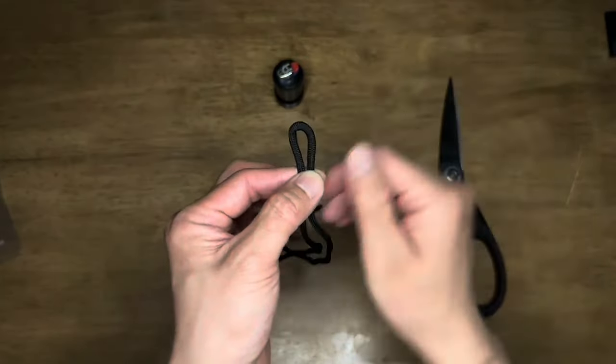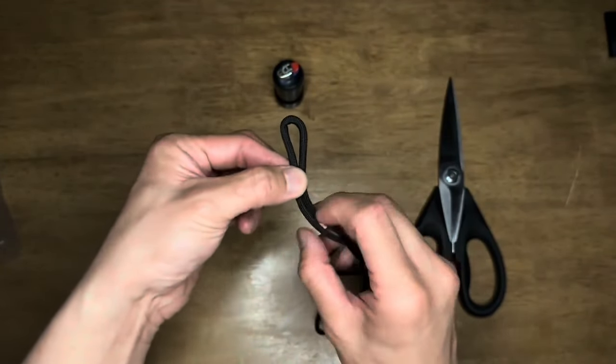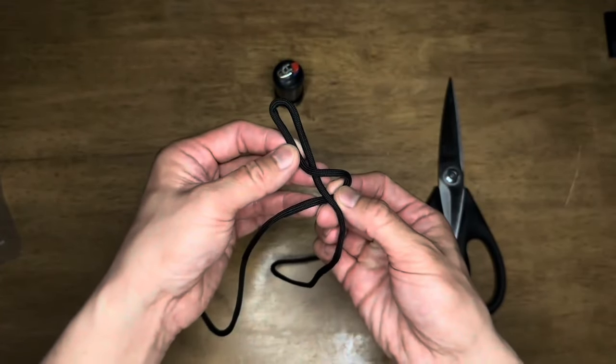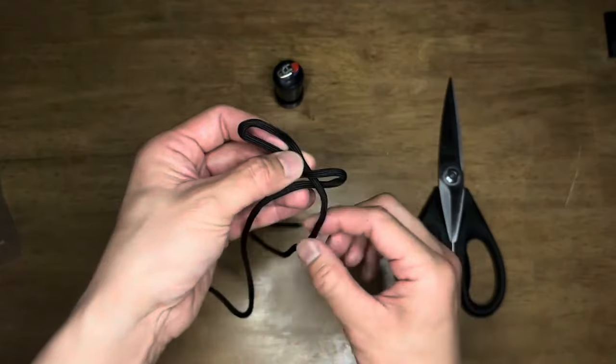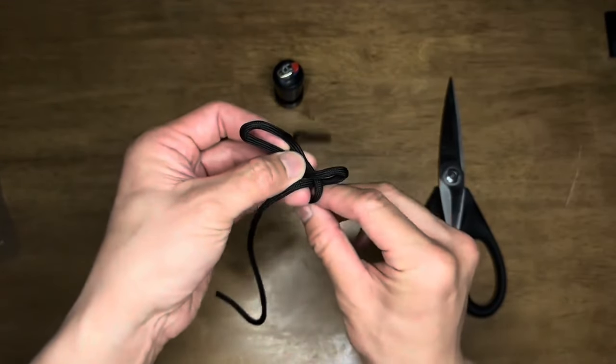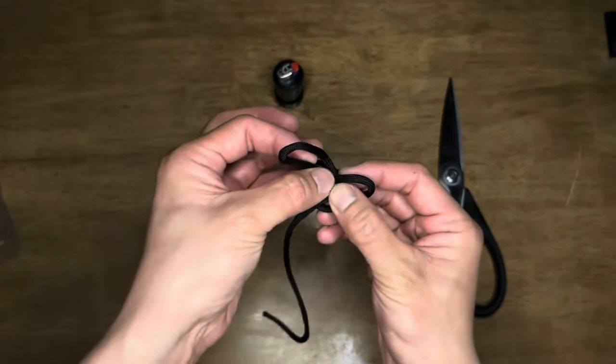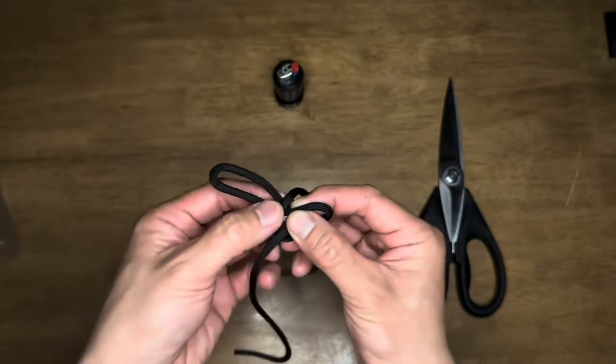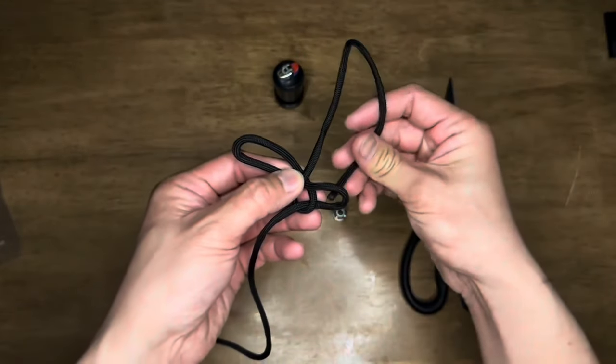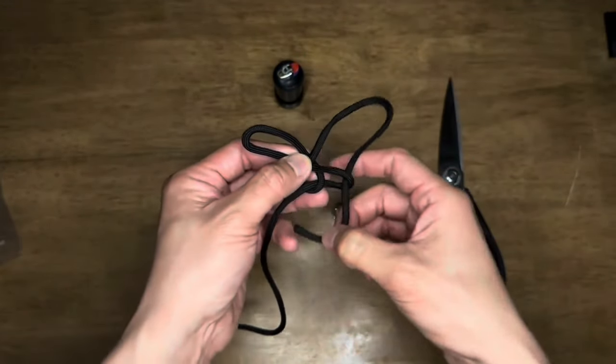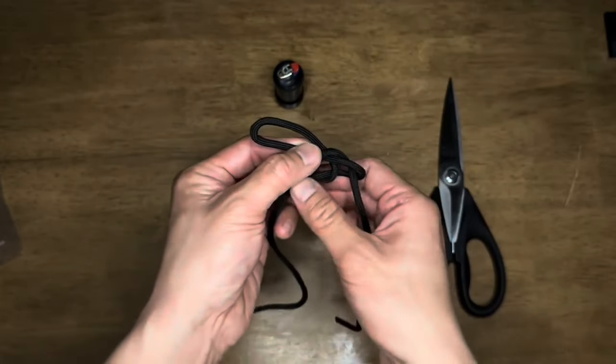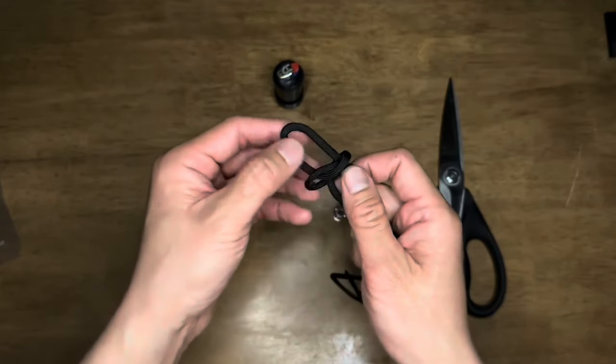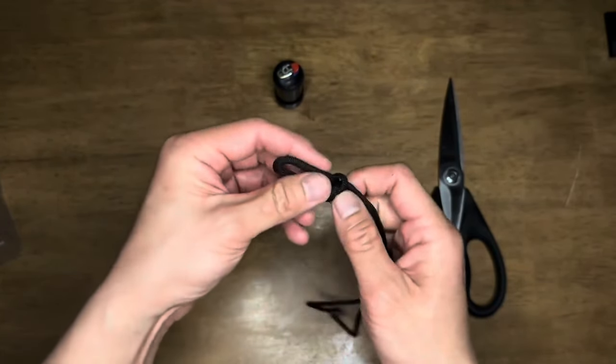Take the left side, go over then under the right side. Then take the right side, go under the left side, then over the top loop into the side loop you made with the left side of the paracord. Tighten the knot but don't tighten it too tight while maintaining the 1 inch loop at the end.